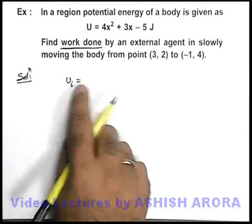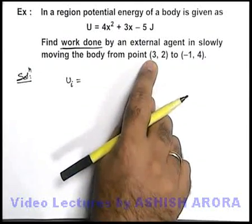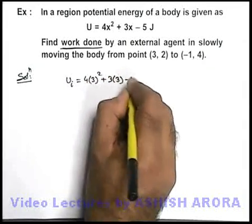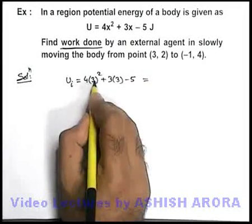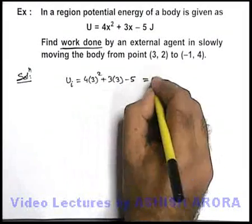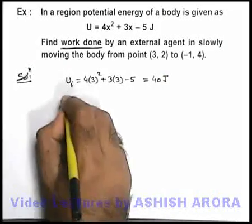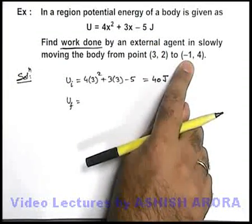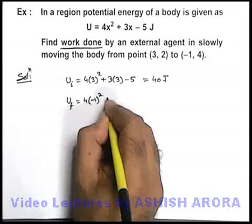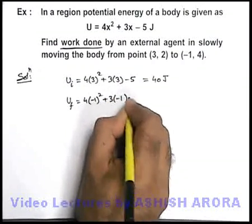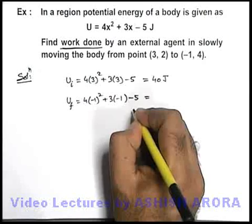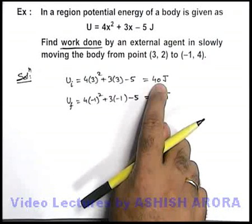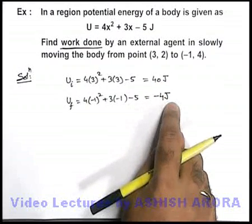The initial position has x-coordinate 3, so the initial potential energy is 4(3²) + 3(3) − 5 = 36 + 9 − 5 = 40 joules. Similarly, at the final position with x = −1, the potential energy is 4(−1²) + 3(−1) − 5, which gives us −4 joules. So at the initial position energy was 40 joules and at the final position energy is −4 joules.